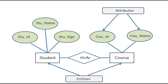Let's go over the ER or Entity Relationship model first, which is comprised of rectangles, ellipses, and rhombuses. Rectangles are entity types. Ellipses are attributes of entity types, and rhombuses are relationships.